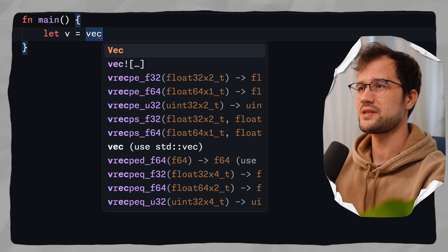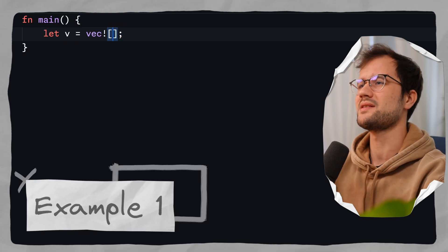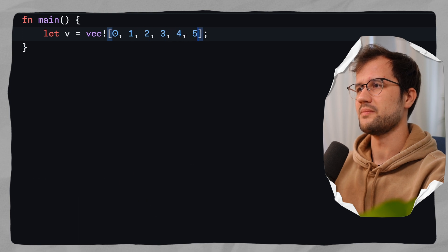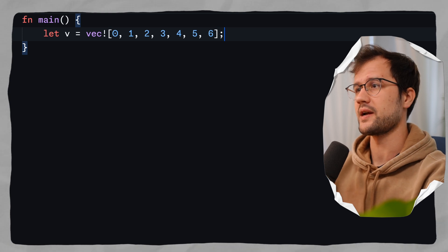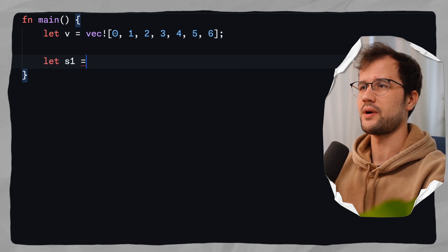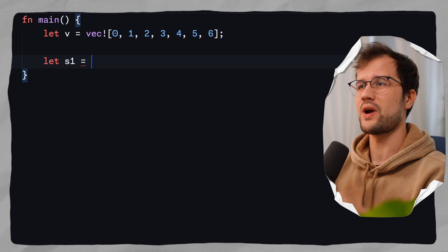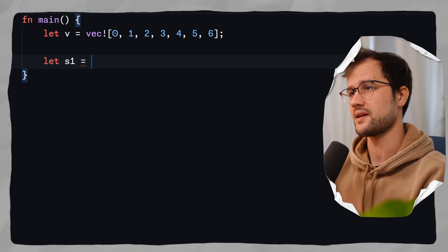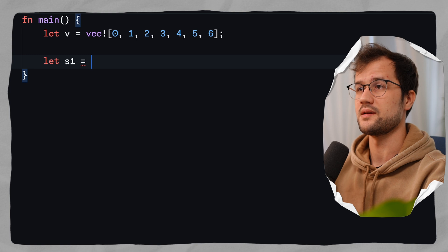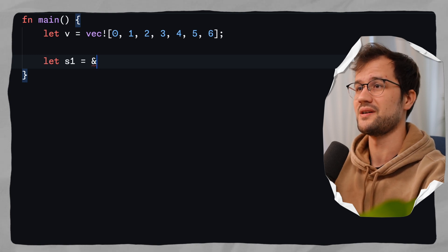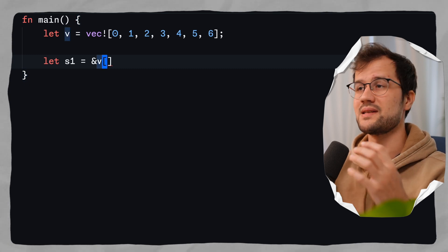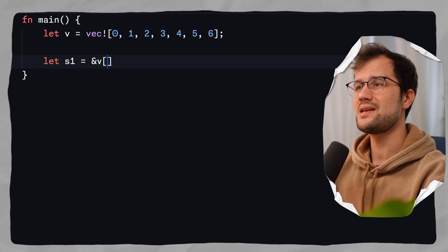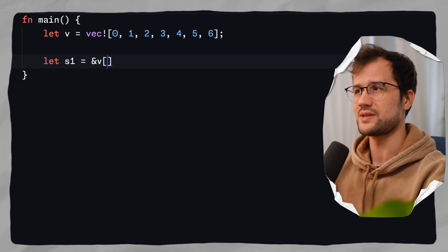Let's get into the first example, where we are creating a simple array with some numbers. How can we now leverage slices with this array? We declare a variable, reference the vector, and apply the slicing technique. We create a reference — not taking ownership — of V, and then we access the elements inside the vector using the dot-dot slicing functionality.